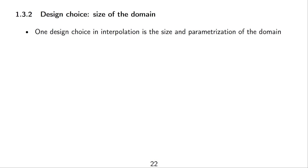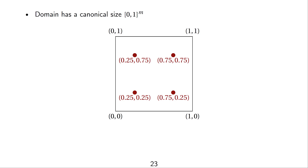One thing to look at is the parameterization of the domain. We are given some image function and the question is how big is the domain. For example, the domain could be defined in some canonical size — that means [0,1]^m. So for each of the dimensions, the values indexing the domain can be from 0 to 1. Here we see an image parameterized from (0,0) to (1,1), so the lower left corner is (0,0) and the upper right corner is (1,1).